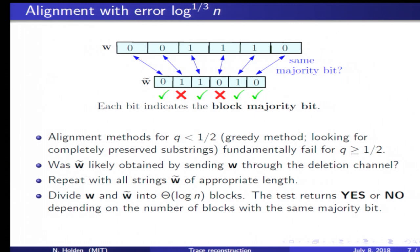We look at block number j in W and block number j in W tilde. We ask ourselves whether the majority bit is same or different. If the majority bit is the same, that event is more likely if W tilde was obtained by sending W through the deletion channel. Our test simply counts how often the majority bit in a certain block in W tilde is the same as the majority bit in the corresponding block in W.